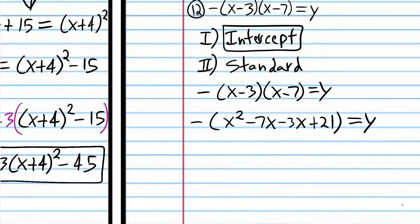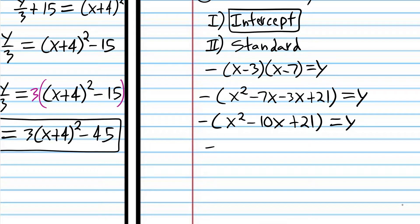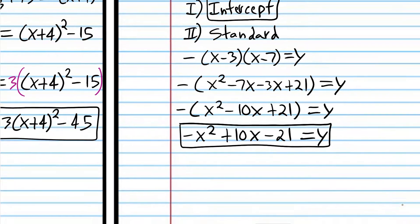Then: negative 1 times x squared is negative x squared, negative 1 times negative 10x is positive 10x, and negative 1 times positive 21 is negative 21. So now we are in standard form. That was the easy part of the problem. Now we're going to convert to vertex form, which requires completing the square — that's why it's a little more involved.